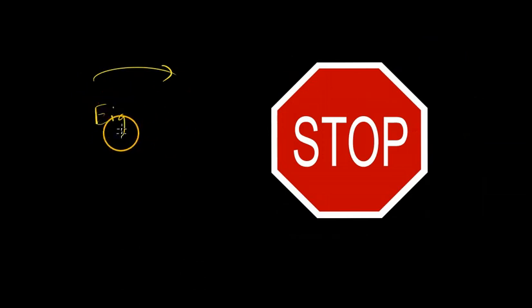Also, have you ever seen this stop sign? This stop sign has eight sides. One, two, three, four, five, six, seven, and eight. So that's an octagon having eight sides.